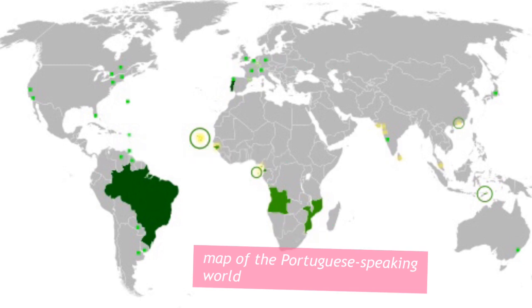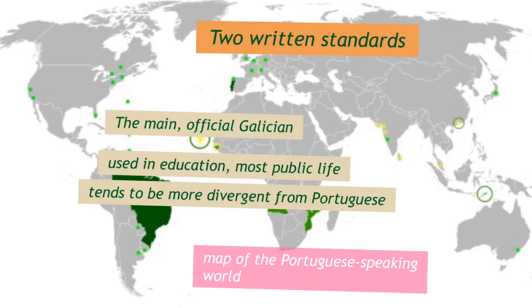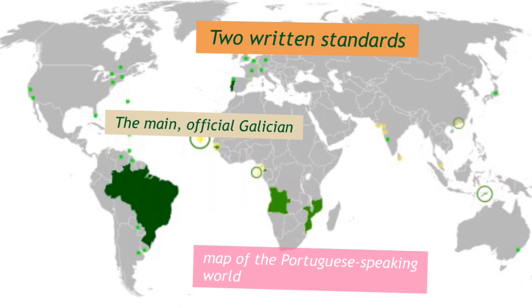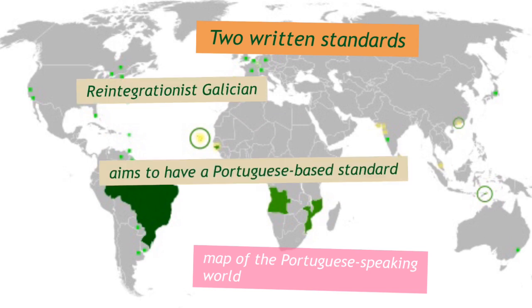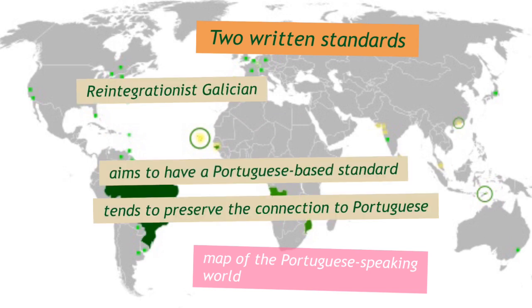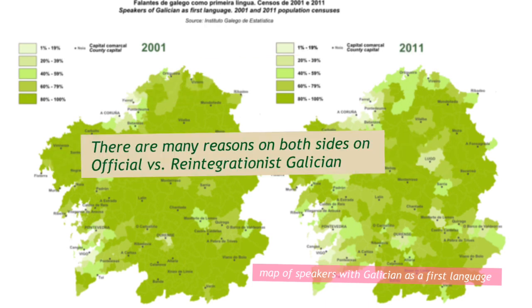Nowadays, the Galician language has two written standards. One is the official one used in education and most public life, which tends to be more accepting of the divergences of Galician from Portuguese. But there is also another standard called Reintegrationalist, which aims to preserve the connection to Portuguese as much as possible. There are many news outlets that also use the Reintegrationist Galician, so the situation of the language is a little bit complex.